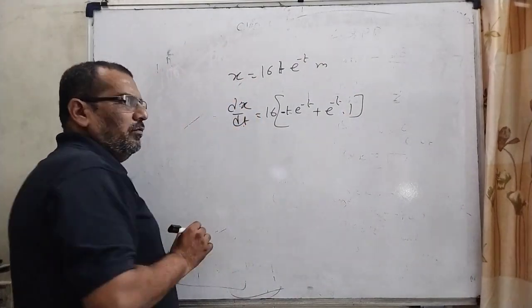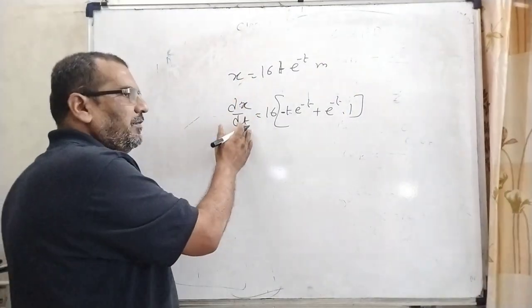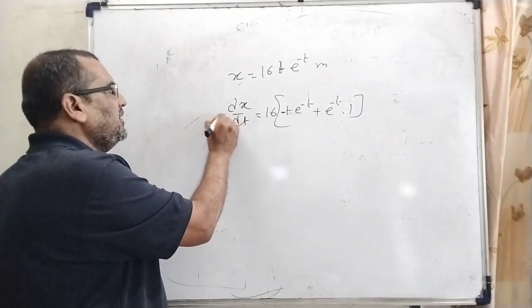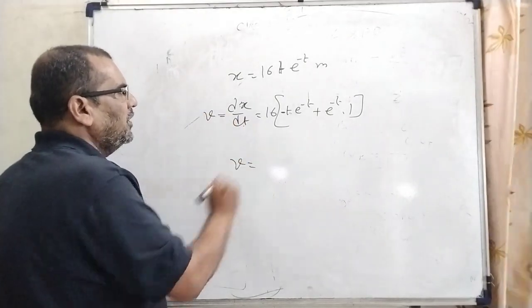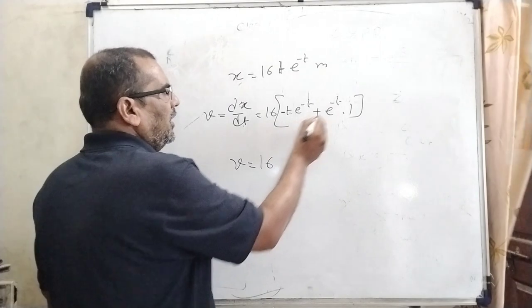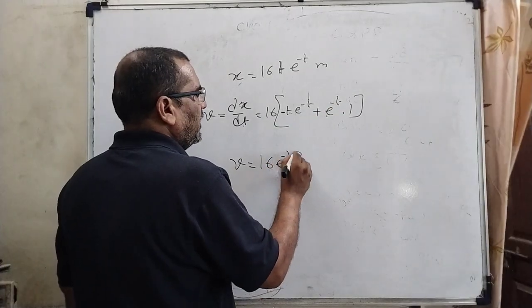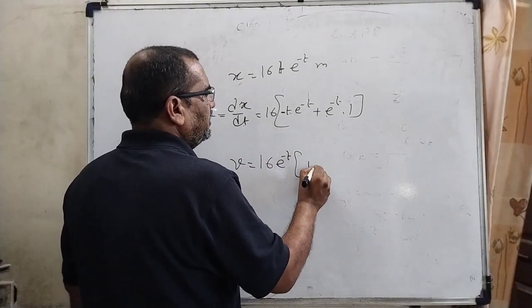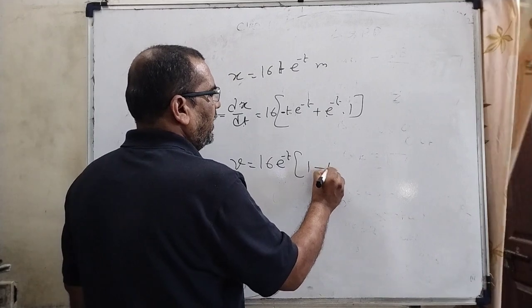dx/dt - what is dx/dt? Position differentiated with respect to time, that means it is velocity. So here the velocity is 16e^(-t) taken common, then it becomes (1 - t).